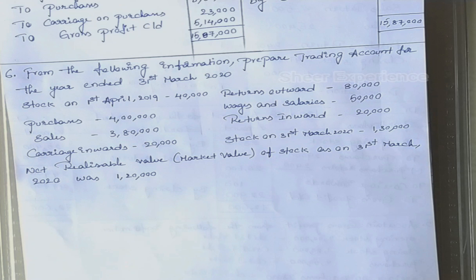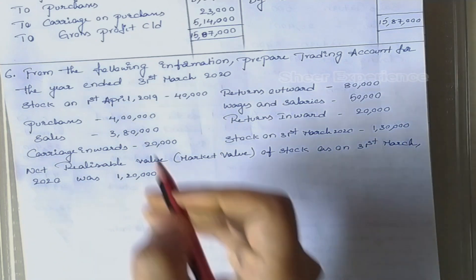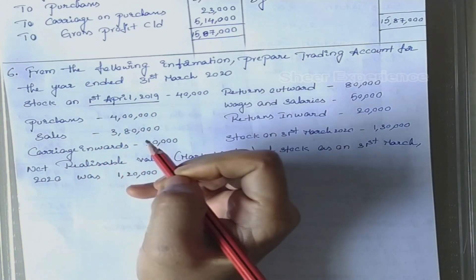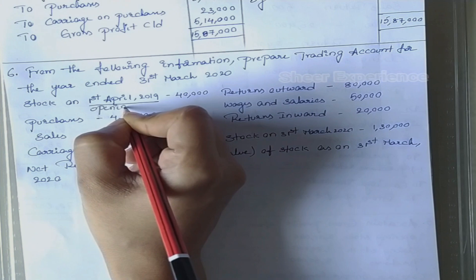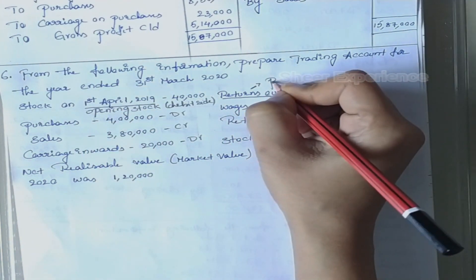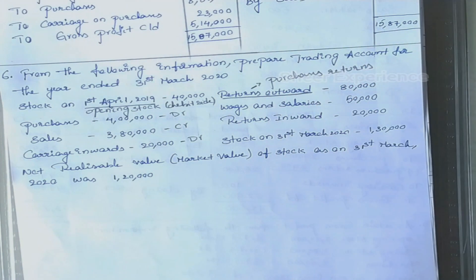Stock on 31st March 2020: 1,30,000. Net realizable value or market value of stock as on 31st March 2020 was 1,20,000. Here they have given just 'stock' with the date 1st April 2019, so this is the opening stock. Returns outwards is nothing but purchase returns. Wages and salaries are direct expenses, so we will mention them on the debit side of the trading account.